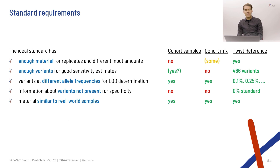Looking at our standard requirements again: with the TWIST reference, we finally have enough material to do as many replicates and different input amounts as we want, and we can also test different lab protocols. We have enough variants for good sensitivity estimates — the larger your panel, the better. We have variants at different allele frequencies for limit-of-detection determination. We know about variants not present because we have a 0% standard, and the material is very similar to real-world samples.